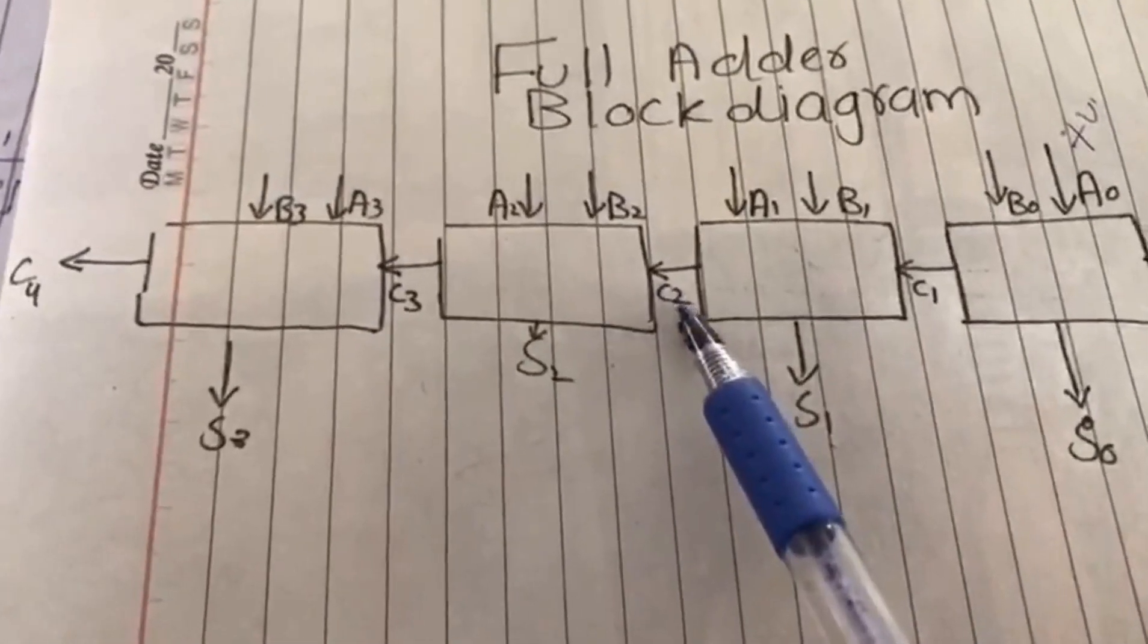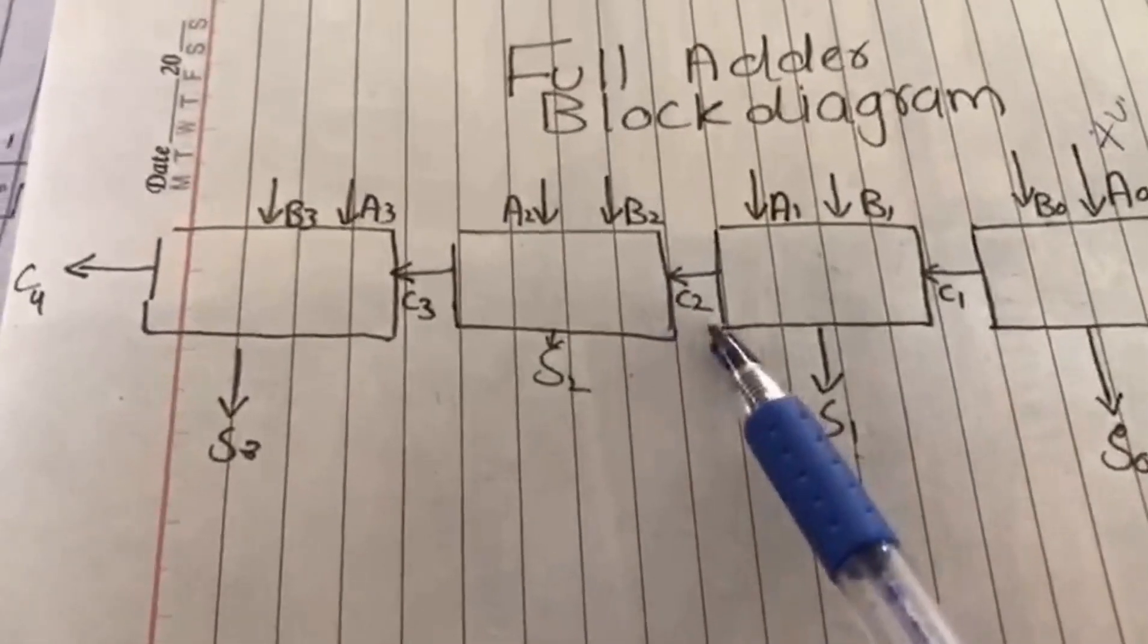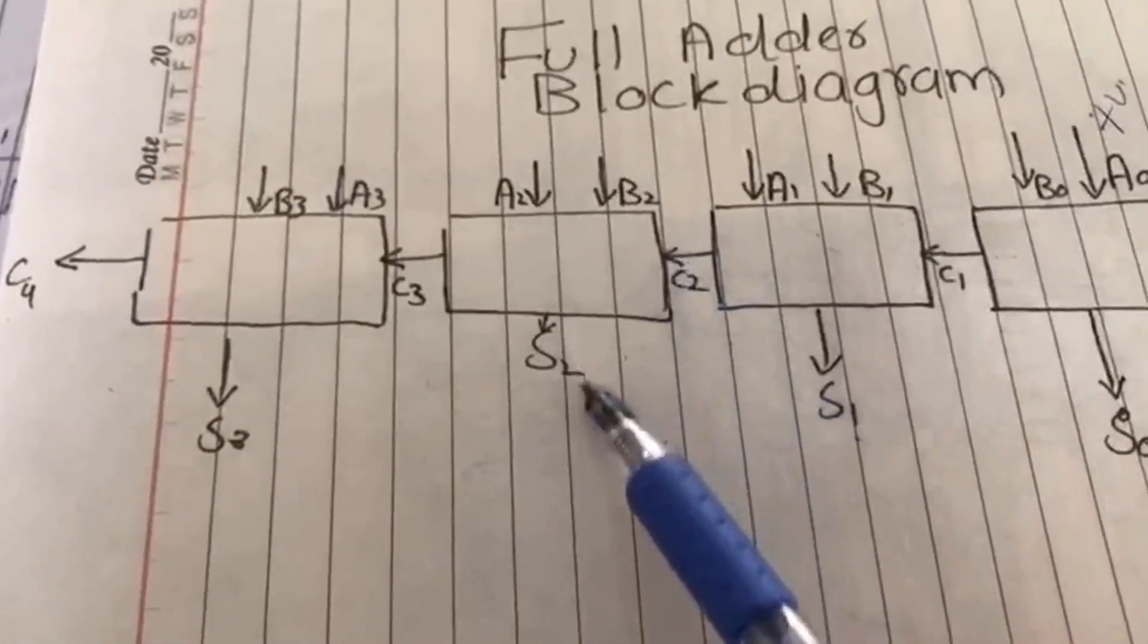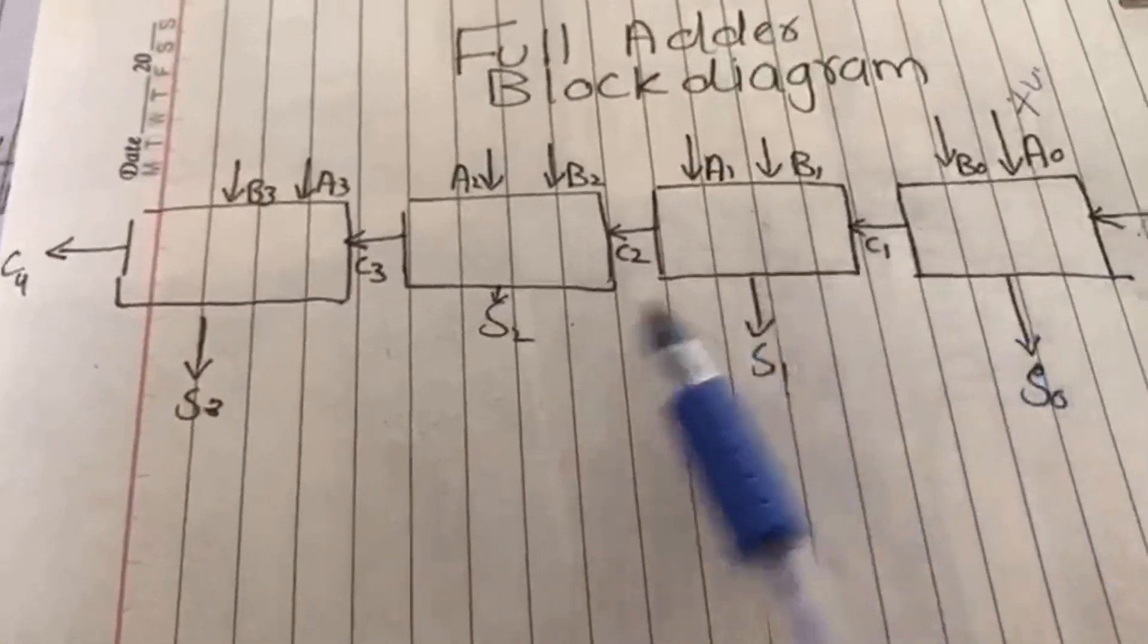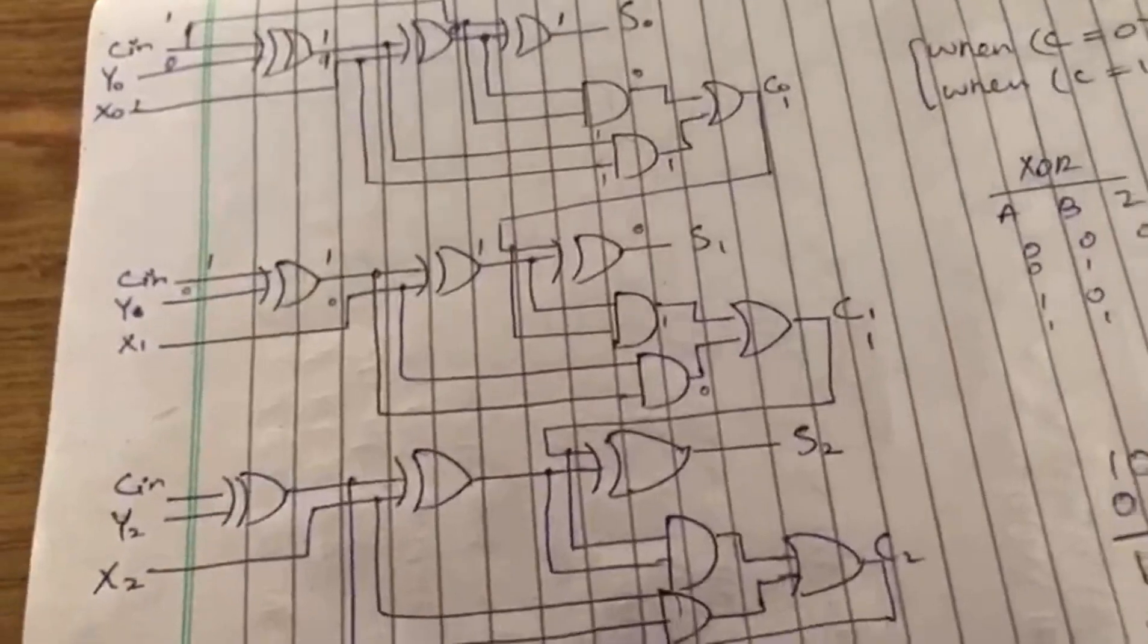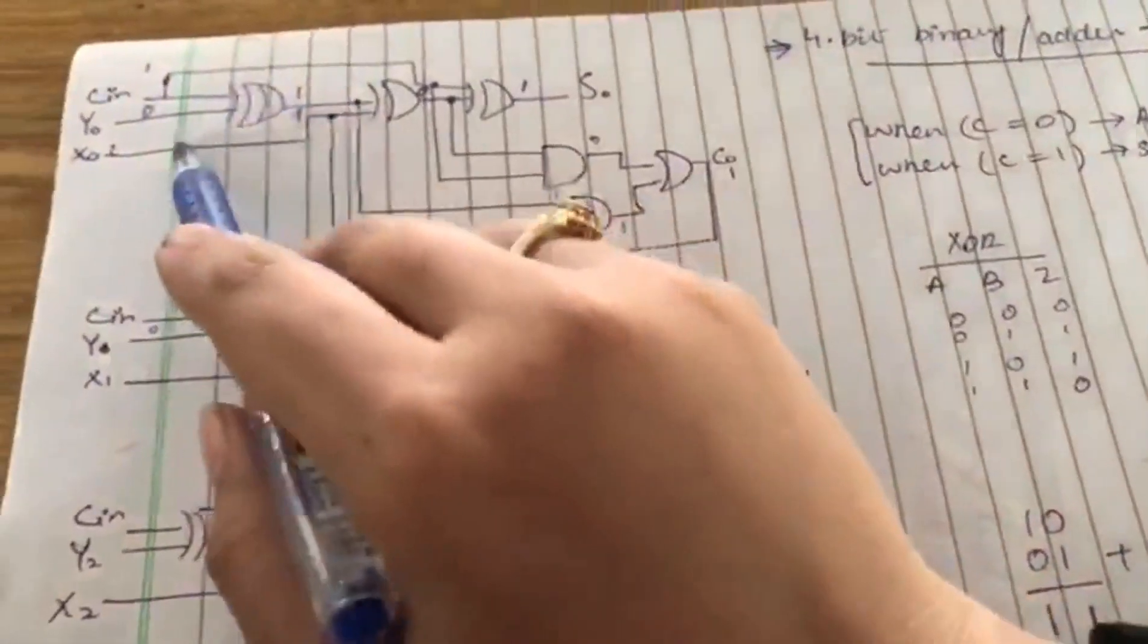Similarly, C2 will be the next carry. If it is 0, it will not be added. If it is 1, then it will be added. This will give S2. In the block diagram, this is the process that we have shown.